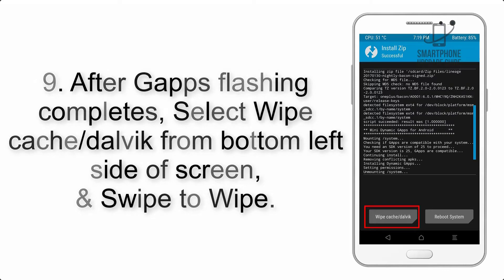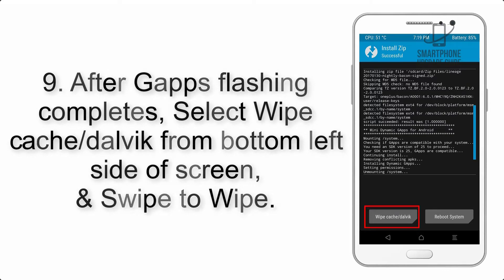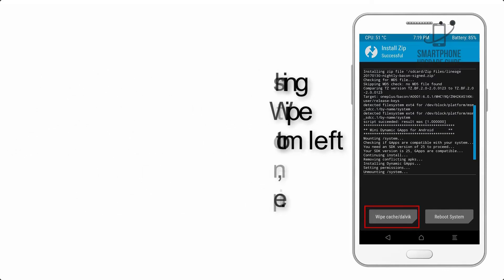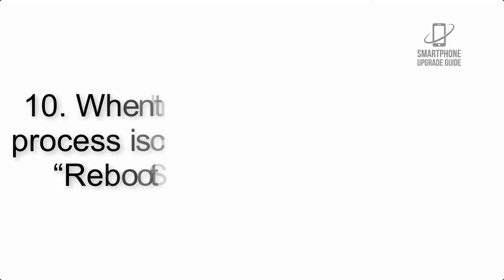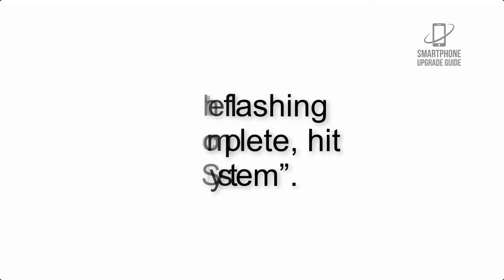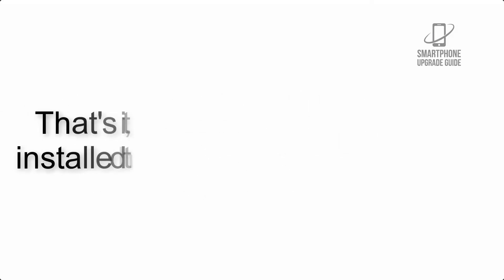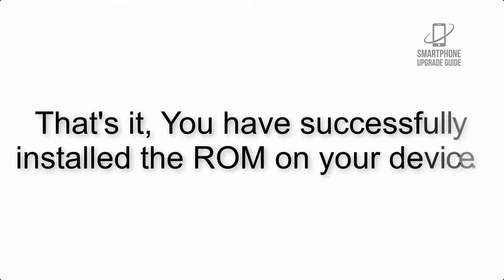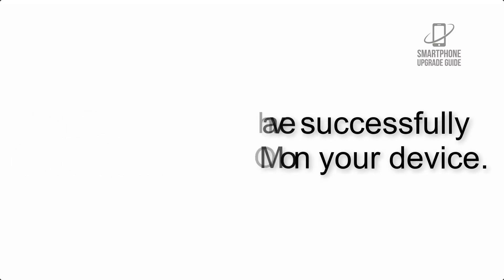Step 8: Flash the GApps zip package in the same manner. Step 9: After GApps flashing completes, select Wipe Cache and Dalvik from the bottom left side of the screen and swipe to wipe. Step 10: When the flashing process is complete, hit Reboot System. That's it — you have successfully installed the ROM on your device.